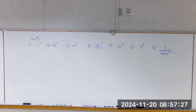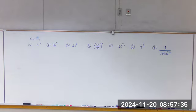Number five: when we divide, we subtract the exponents — the bases have to be the same. A to the m over a to the n — we subtract the exponents — that's a to the m minus n.